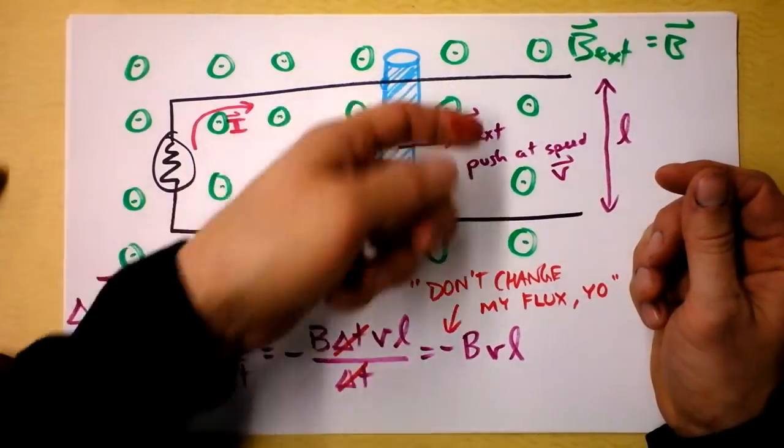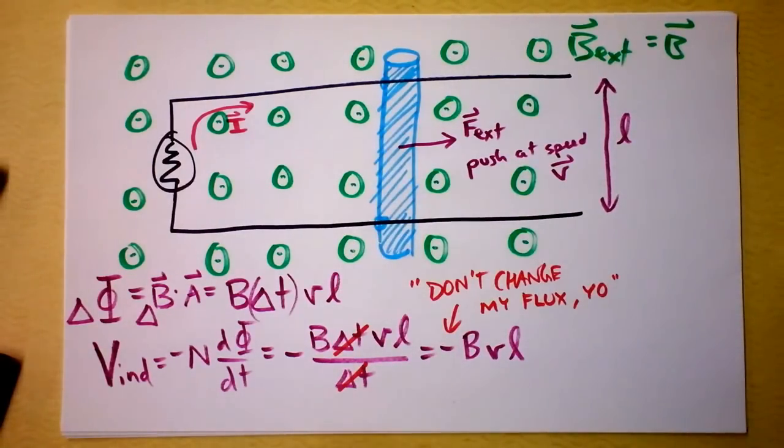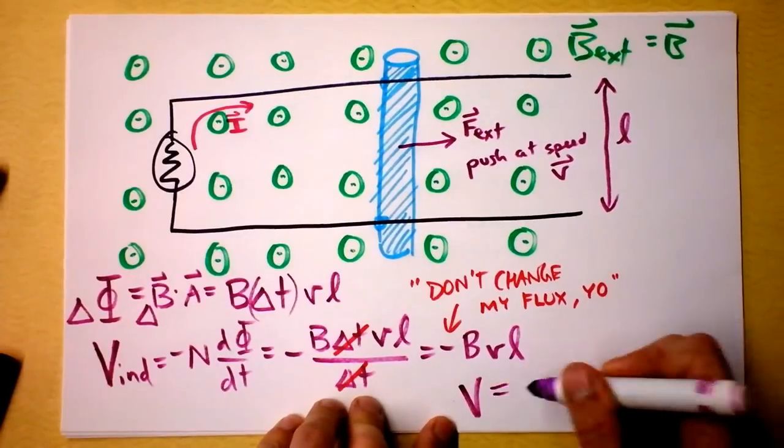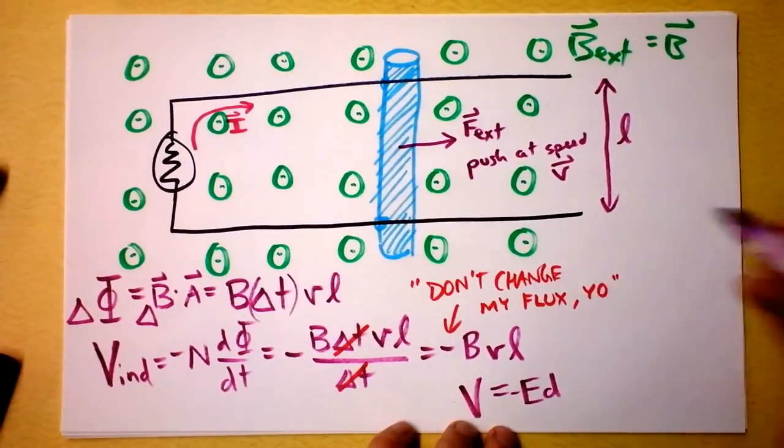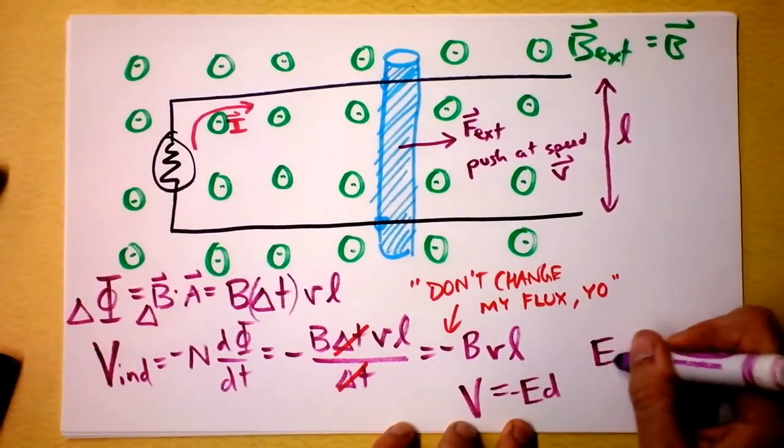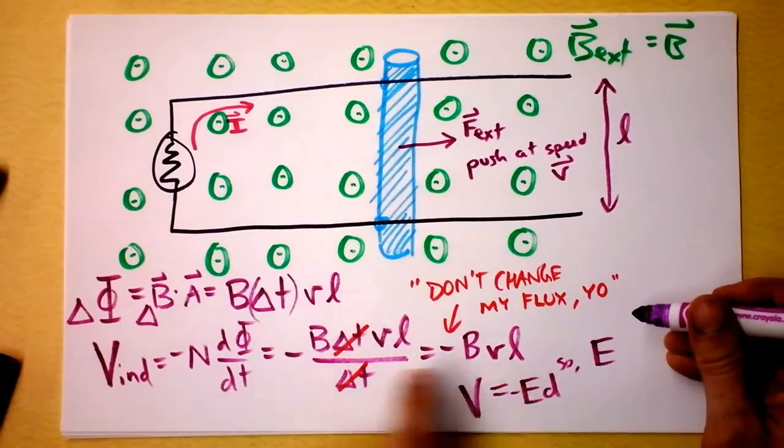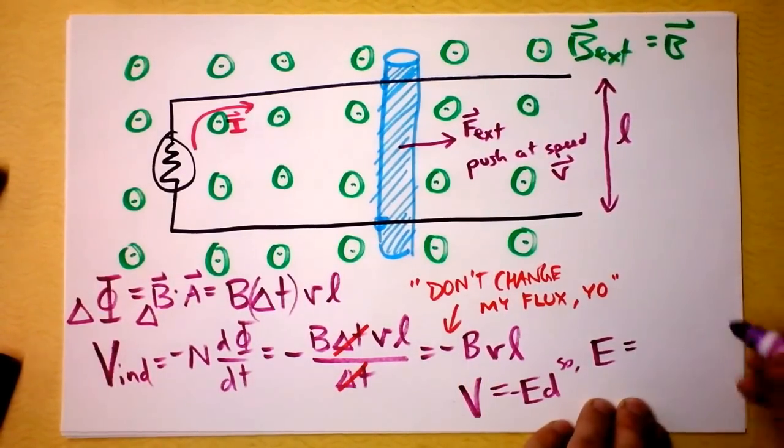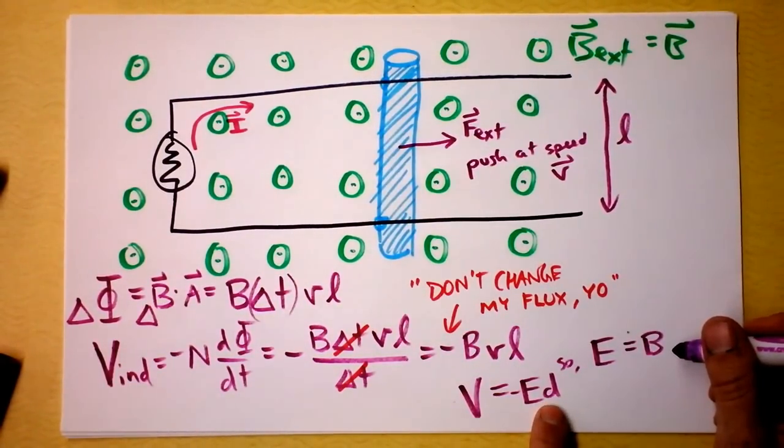You could also do it as the charge is moving this direction in a magnetic field that's up and use the right hand rule. I don't care how you do it. But my point is the induced voltage, the induced voltage is a magnetic field because V is negative ed. So if we were trying to find the electric field, the electric field is, V is negative ed and V is also negative BVL.